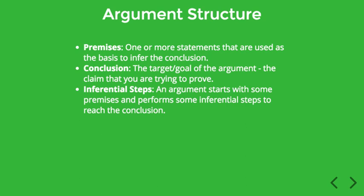Finally, when you have longer arguments, you might find that if you're trying to prove some statement — let's call it Z — it might be helpful first to prove some other statement, like X or Y. So you have some premises to start with, and then you use those premises to prove X, and then you use X to prove Y, and then finally use Y to prove Z. In these cases, X and Y are not exactly premises, because they themselves are the result of inferential steps. But they're not exactly the conclusion either, because they're just stepping stones on the way to Z. So they're kind of in between, and we'll call them intermediate conclusions.